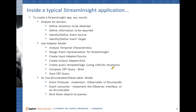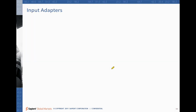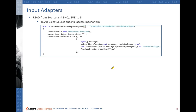If you use the IObservable/IEnumerable model instead of the adapter model, on your event producer you will implement an IObservable or IEnumerable for either push or pull. On the event consumers, you will implement the IObserver interface or a class that consumes an IEnumerable, and then bind these objects to queries. Let's take a look at how to write an input adapter.